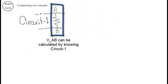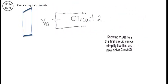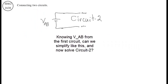VAB can be calculated by knowing circuit one. We want to connect the second circuit. Knowing VAB from the first circuit, can we simplify like this and now solve circuit two?